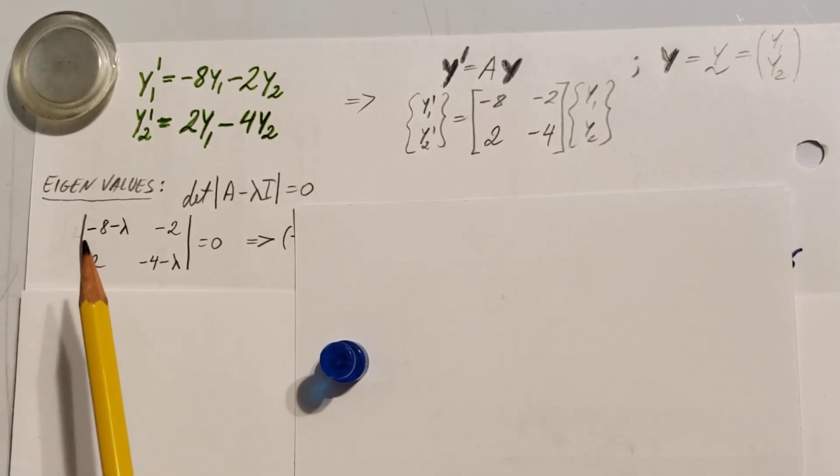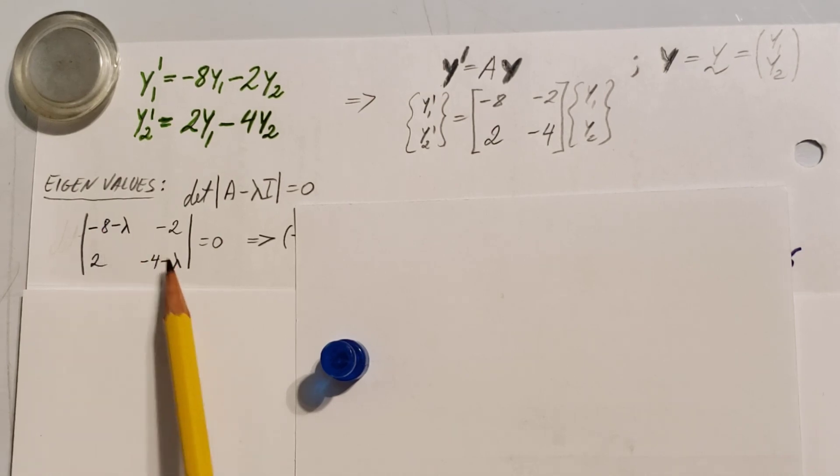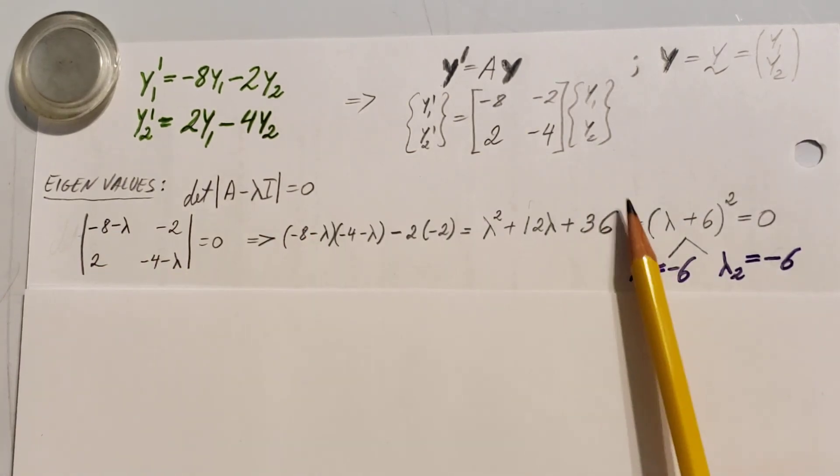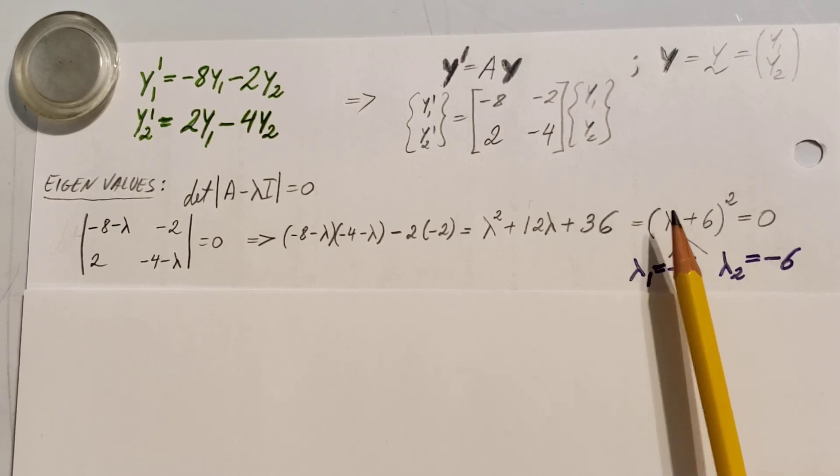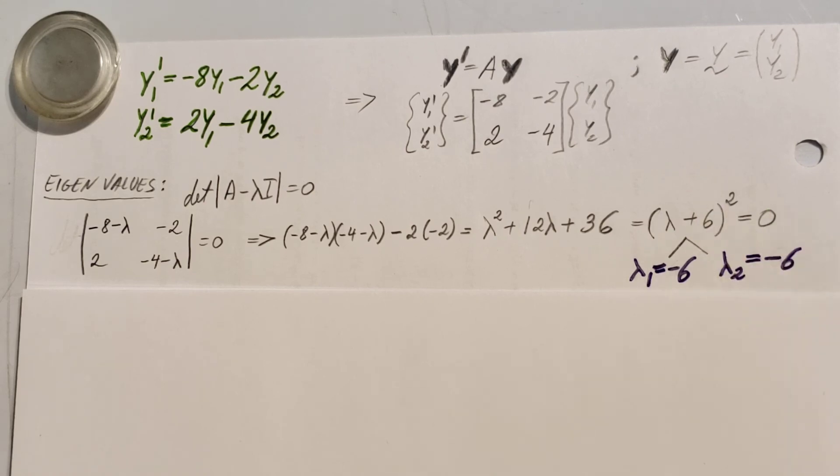Let's go ahead and find that. Here it is: my matrix A minus the lambda for the two diagonals equals 0. Now let's solve the determinant - this times this minus this times this. Here it is, simplify it, and then we can see that we're going to get lambda plus 6 in parentheses squared equals 0.